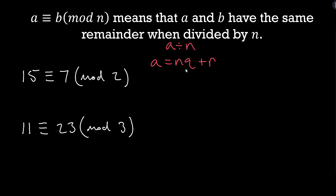This aligns with how we think about division: how many times does n go into a? For example, with 15 divided by 2, we think about how many 2s go into 15 — that's our quotient. Then we have some amount left over, the remainder r, which is always greater than or equal to 0 and less than n. If a is a multiple of n the remainder is 0, but if the remainder were bigger than n we'd be able to put another n in. This comes up a lot.